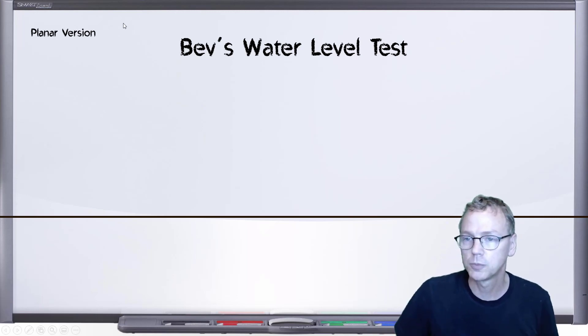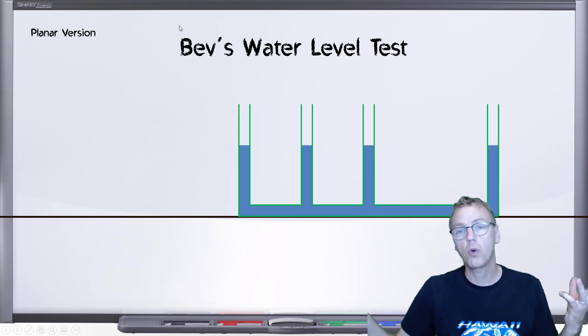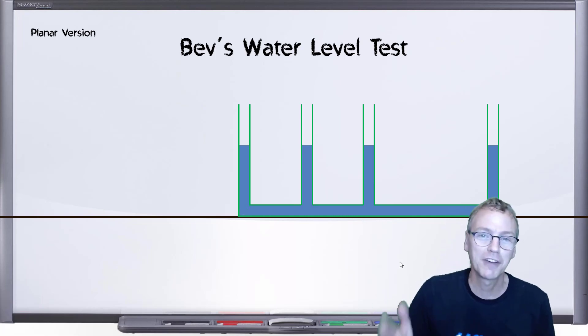All right, so here's Bev's water level test. We start with the water level. It's a very long water level and it has four risers on it. By very long, my understanding was that from the first riser to the next, that's a 200 meter section of water tube, and then there's a 100 meter section and another 100 meter section. So this whole thing is 400 meters long. Correct me if I've got those numbers wrong.